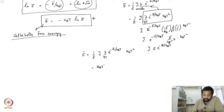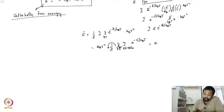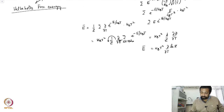Bringing kBT² outside: E-bar = (kBT²/Z) × ∂/∂T of [sum over all states of e^{-e/kBT}]. Be careful not to take the derivative of the 1/Z factor here, as that would be incorrect. This simplifies to kBT² × (1/Z) × ∂Z/∂T, which equals kBT² × ∂(ln Z)/∂T.